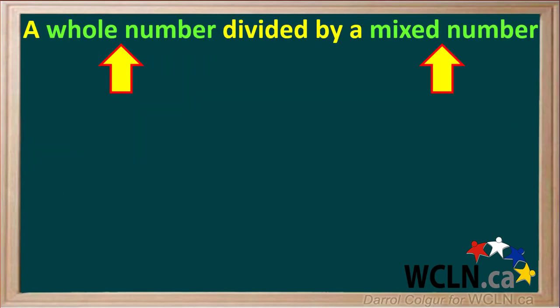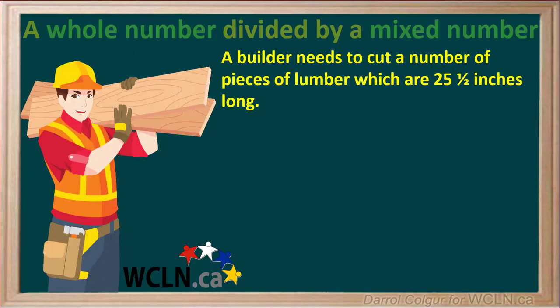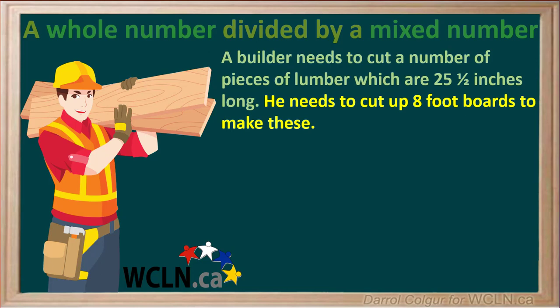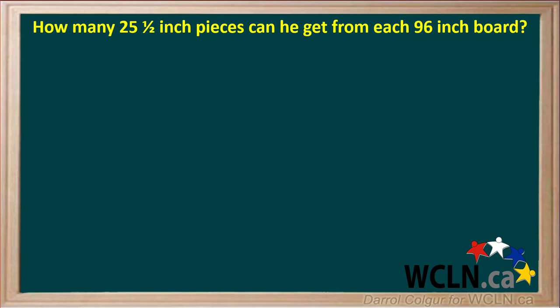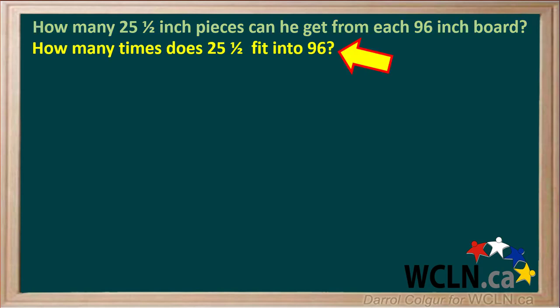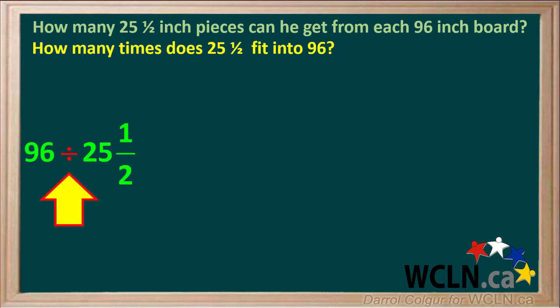Our next example will be a whole number divided by a mixed number. We'll illustrate this with a little problem. A builder needs to cut a number of pieces of lumber which are 25 and a half inches long. He needs to cut up eight-foot-long boards to make these. Eight feet is equal to 96 inches. The question is: how many 25 and a half inch pieces can he get from each 96 inch board? In order to answer this, we need to know how many times 25 and a half will fit into 96.